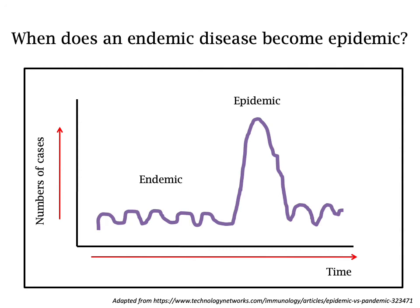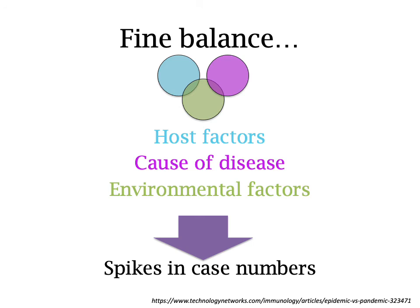So when does an endemic disease become epidemic? Whilst endemic is the baseline level of a disease, an epidemic refers to the often sudden rise in the number of cases above the normal endemic level. There is no established threshold for the number of cases, duration, or geographical areas affected for something to be deemed an epidemic. Seasonal influenza is often described as a seasonal epidemic. There is a fine balance between host factors, the cause of a disease — that can be a fungi, a virus, or bacteria — and environmental factors, and a shift in any of these factors can result in a spike in case numbers.